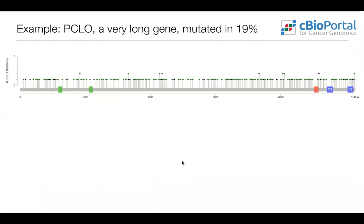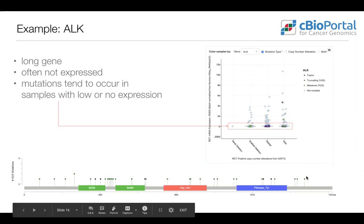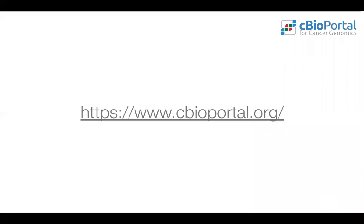A lot of these presumed passenger mutations occur in very long genes. For example, PCLO is longer than 5,000 amino acids and just randomly accumulates many mutations. KRAS, by contrast, is only a few hundred amino acids long with much less potential for random mutations. Another example is ALK — known for gene fusions in lung cancer, but also randomly mutated across its amino acid sequence. ALK is relatively long, often not expressed in lung cancer, and therefore accumulates mutations because there's no negative selection and no transcription-coupled repair since the gene is not expressed.